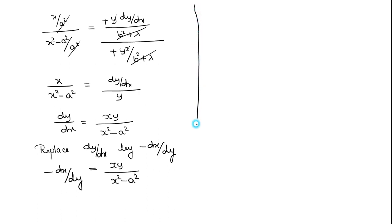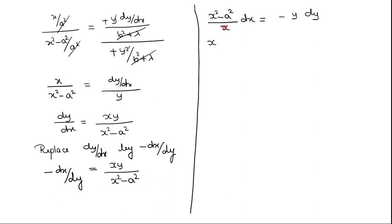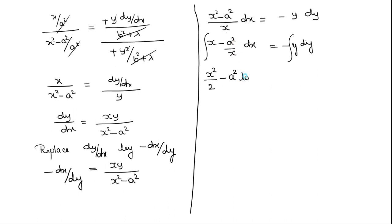The third step is to solve this differential equation. We can do it by the variable separable method. It is (x² − a²)/x · dx = −y · dy, which gives (x − a²/x) dx = −y dy. On integrating, we get x²/2 − a² log x = −y²/2 + C.